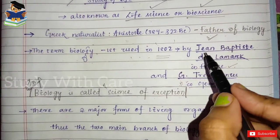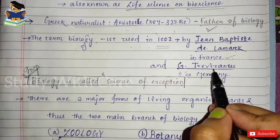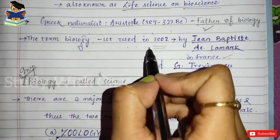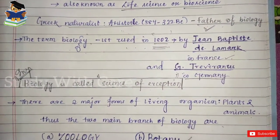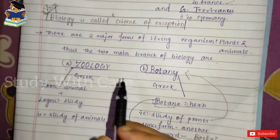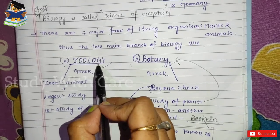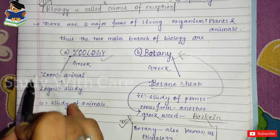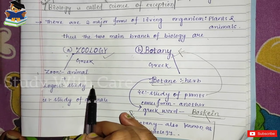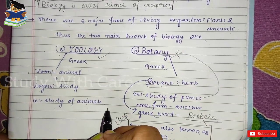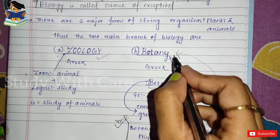The father of botany is Theophrastus, and the father of Indian botany is William Roxburgh. The term biology was first used by Jean Baptiste de Lamarck and G. Trevinanus in 1802. Biology has two main branches: zoology and botany. Zoology comes from two Greek words — zoo, meaning animal, and logos, meaning study.